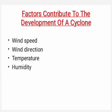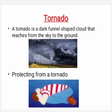Factors that contribute to the development of a cyclone: The intensity of a cyclone depends on wind speed, wind direction, temperature, and humidity. A tornado is a dark funnel-shaped cloud that reaches from the sky to the ground. To protect from a tornado, one has to go down on knees, protecting the head and neck using arms.